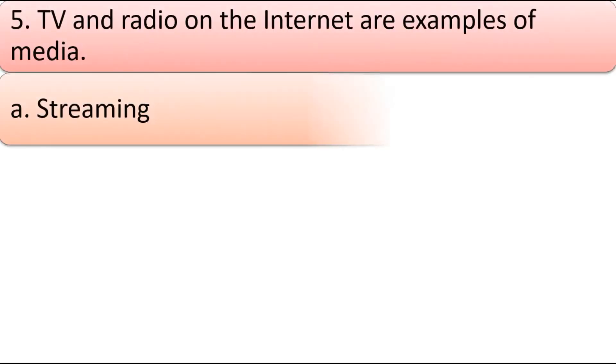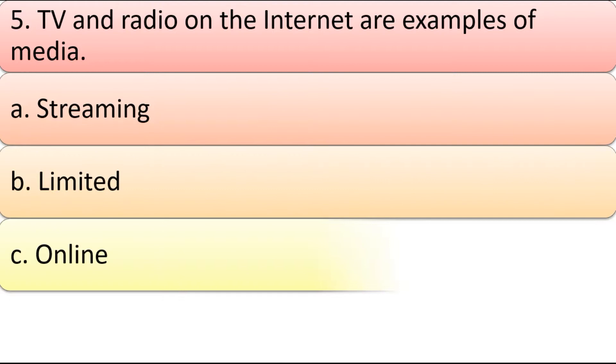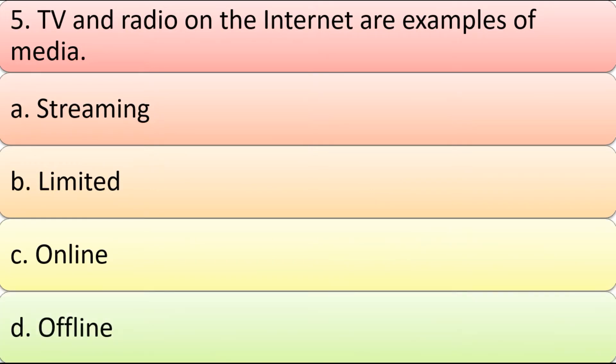If TV and radio on the internet are examples of blank media. Options: a) Streaming, b) Limited, c) Online, d) Offline. Correct answer is a) Streaming.